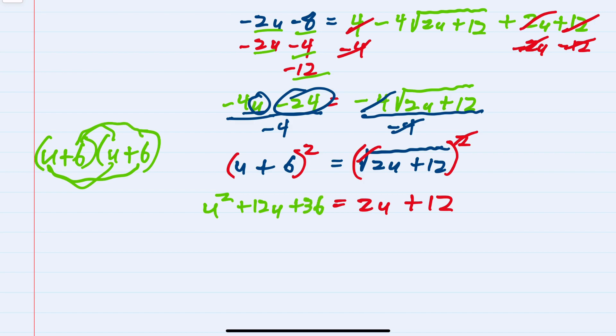At this point we've removed all the radicals. Since we have a quadratic, we need to set this equal to zero by moving all terms to one side. I'll subtract 2u from both sides and subtract 12 from both sides, giving us zero on the right. On the left we have u², and combining like terms we get +10u and +24.